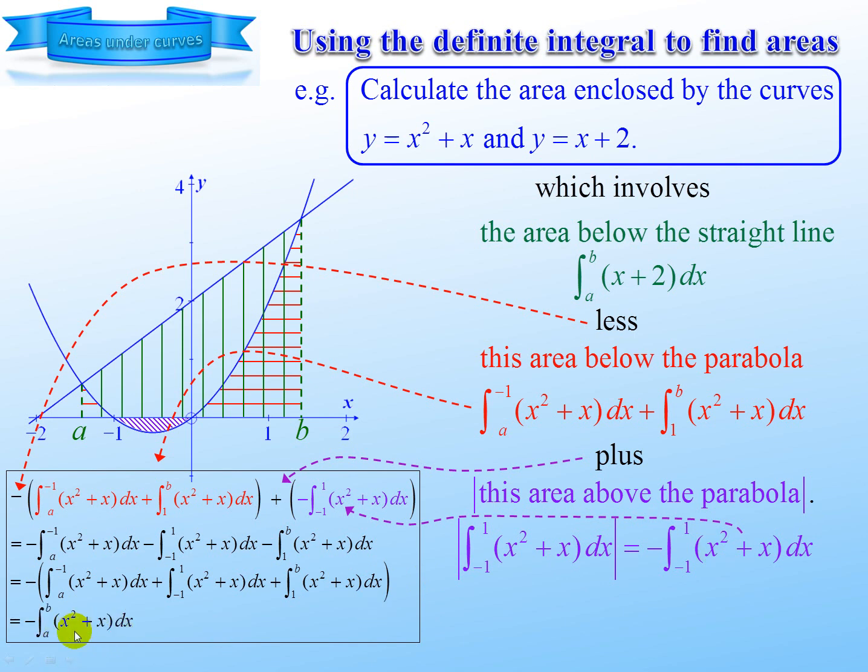So therefore we can write it like that straight off. And there it is. It's the area under the straight line minus the area under the curve. That bottom area there automatically adjusts itself out because it's being negative. It needs to be added on, but it's negative being below, but it's being subtracted, so it does add on.